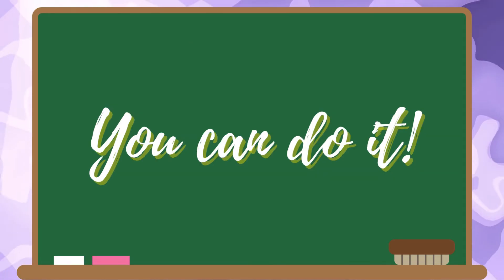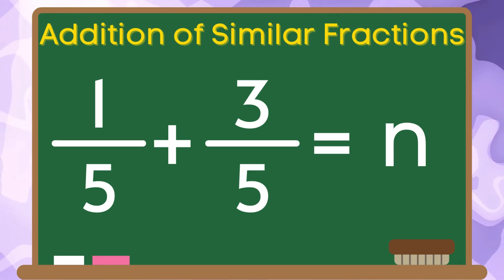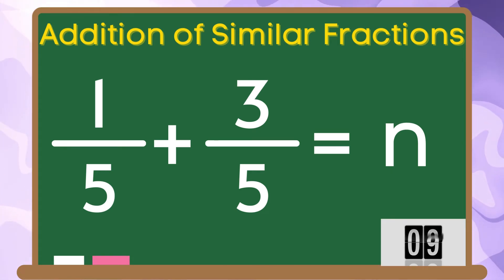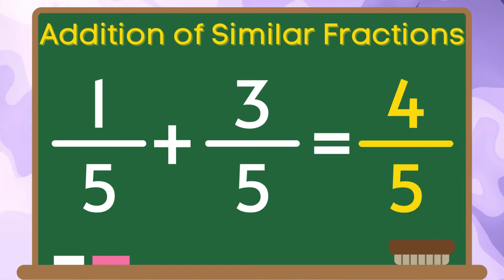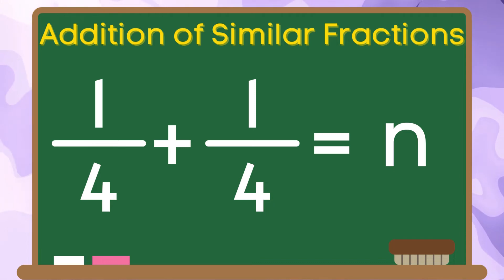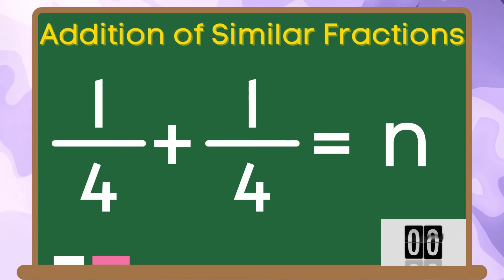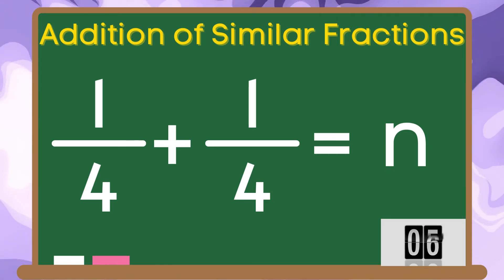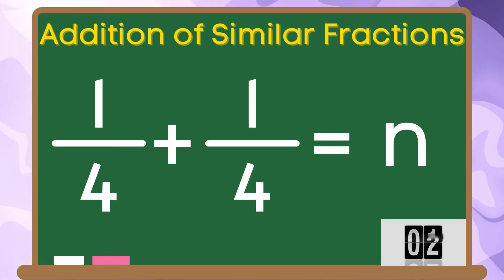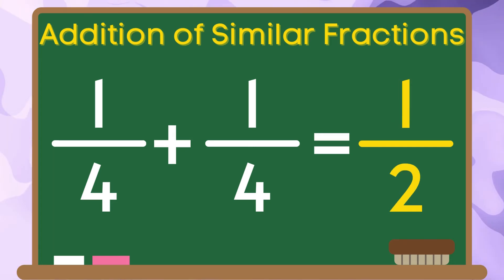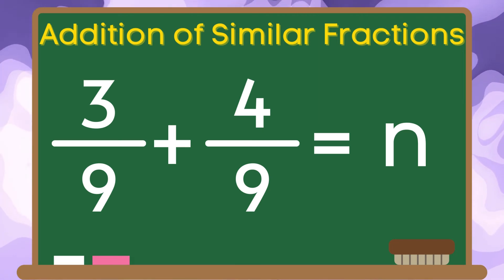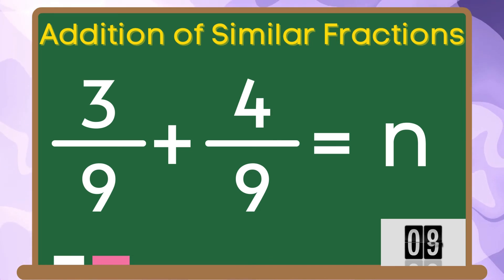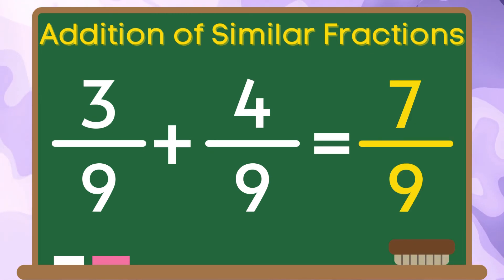Now, let us practice what you've learned from this video. Find the sum of one-fifth and three-fifths. The answer is four-fifths. One-fourth plus one-fourth is equal to n — the correct answer is two-fourths or one-half. And for the last item, three-ninths plus four-ninths is equal to n — the correct answer is seven-ninths.